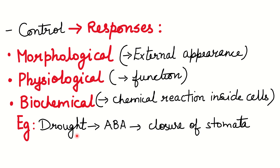For example, during drought conditions, the plant hormone ABA (abscisic acid) causes closure of the stomata. If the stomata remain open, water evaporates and is wasted during drought. So ABA controls this response. This illustrates how plant hormones control morphological, physiological, and biochemical responses.